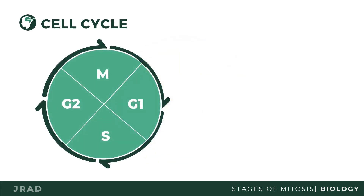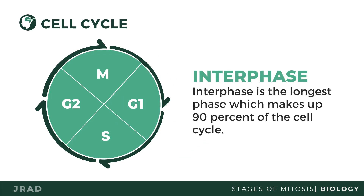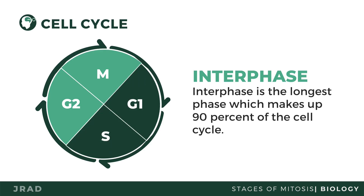The interphase is the longest phase, making up 90% of the cell cycle. It is divided into three sub-phases: Gap 1 or G1 phase, Synthesis or S phase, and Gap 2 or G2 phase.